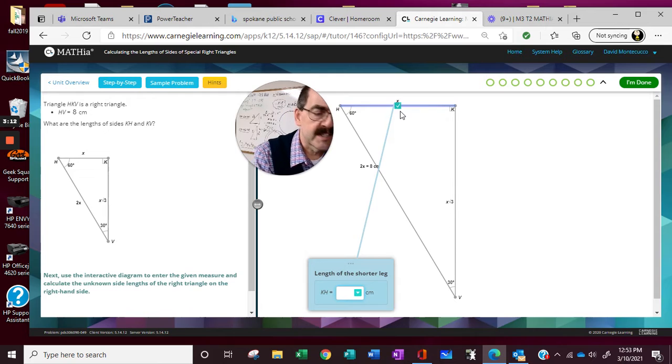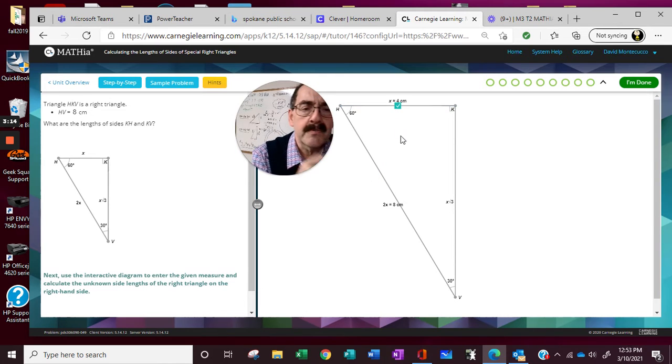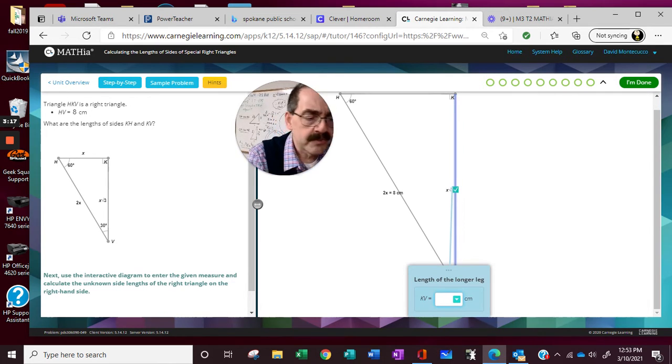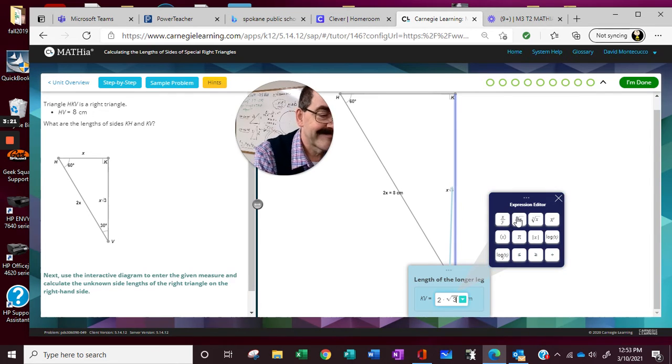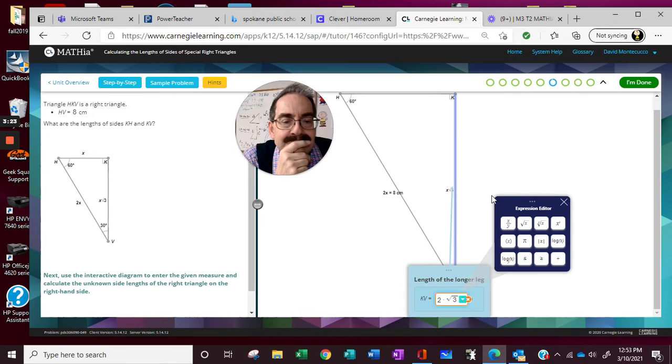And we're given HV. So this is given to us as 8. So we'll cut this in half. 8 divide by 2. And then we'll take 4 times radical 3.